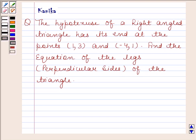Let's first make a figure of this question. Let ACB be a right-angled triangle at C. AB is the hypotenuse and this hypotenuse has its end at the points (1, 3) and (-4, 1).